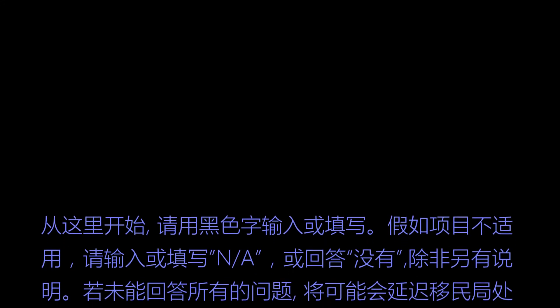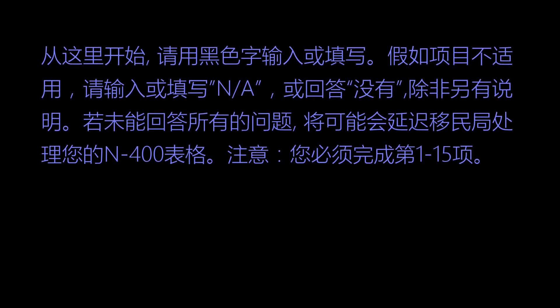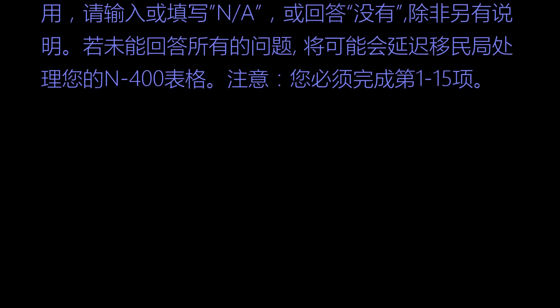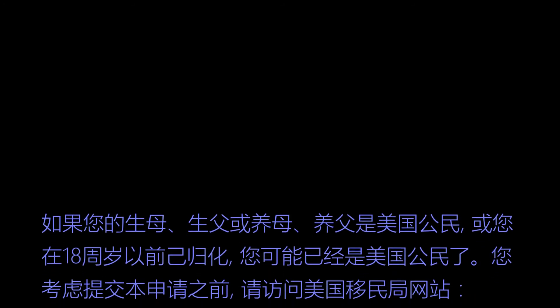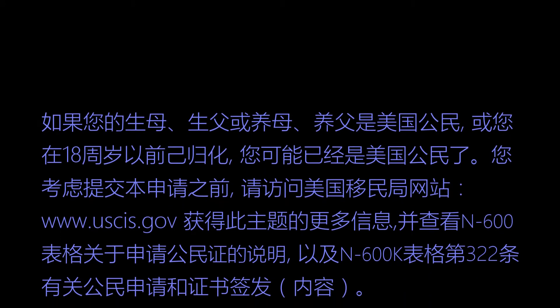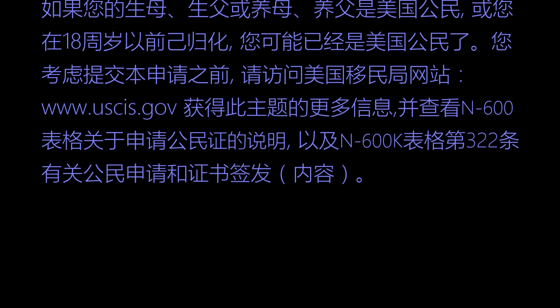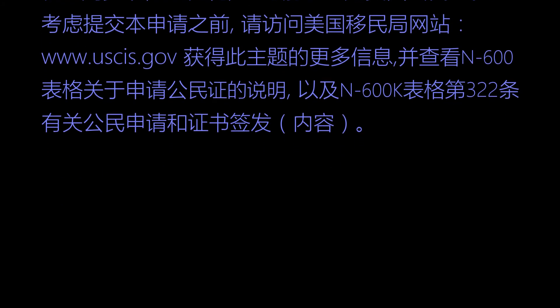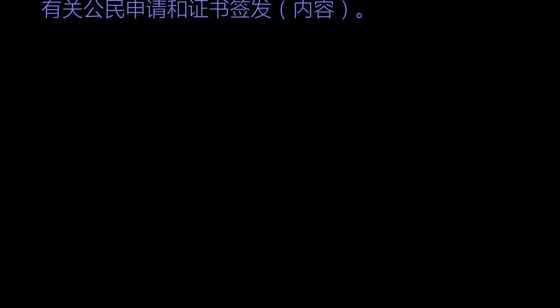从这里开始，请用黑色字输入或填写。假如项目不适用，请输入或填写NA，或回答没有，除非另有说明。若未能回答所有的问题，将可能会延迟移民局处理您的N400表格。注意：您必须完成第一到15项。如果您的生母、生父或养母、养父是美国公民，或您在18周岁以前规划了，您可能已经是美国公民了。您考虑提交本申请之前，请访问美国移民局网站www.uscis.gov获得更多信息，并查看N600表格关于申请公民证的说明，以及N600K表格第322条有关公民申请和证书签发的内容。您的父母是美国公民吗？